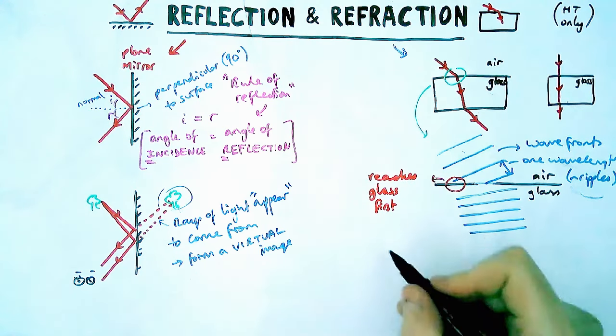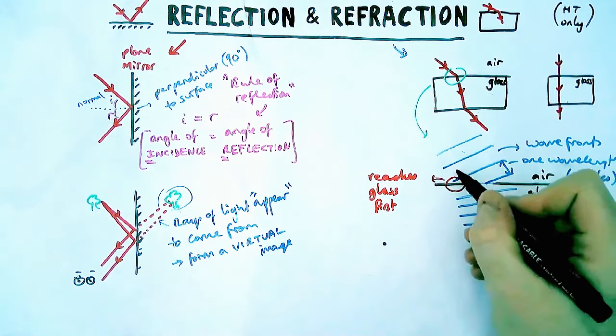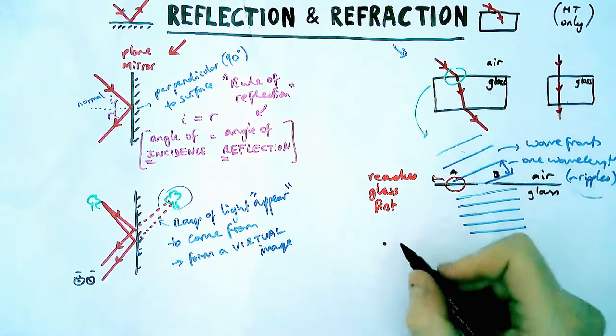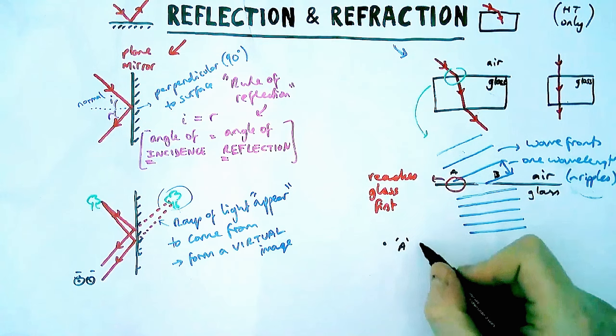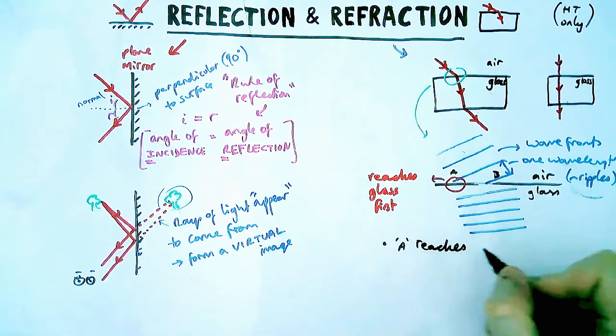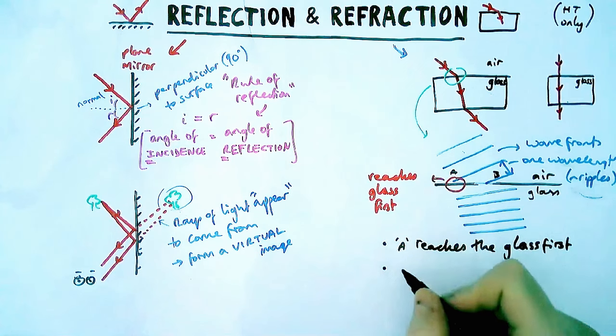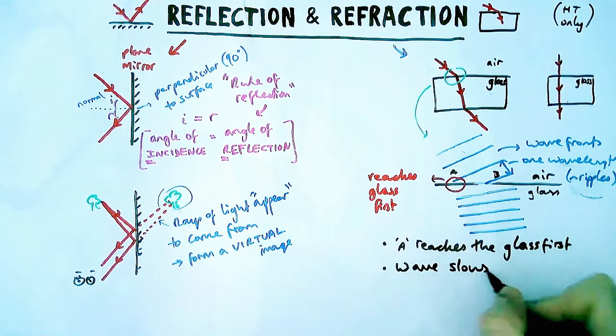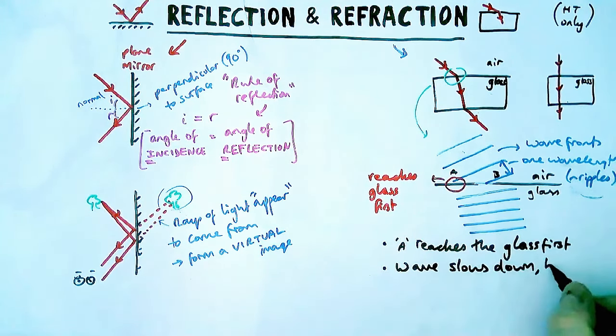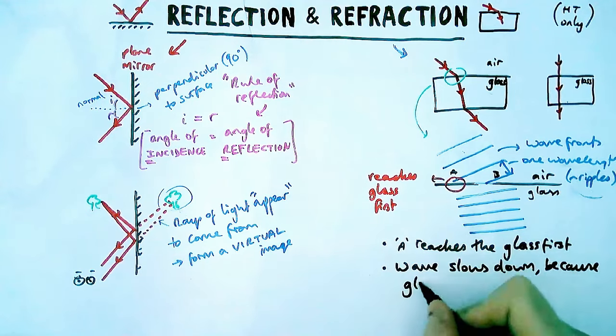So how would you write that as like a kind of three point explanation? So I'm going to call it A and B. A just means the bit on the left that's circled. So we say A would reach the glass boundary first and what happens then is that the wave, doesn't have to be light but usually is, the wave will slow down. The reason it slows down is because glass is more dense than air.